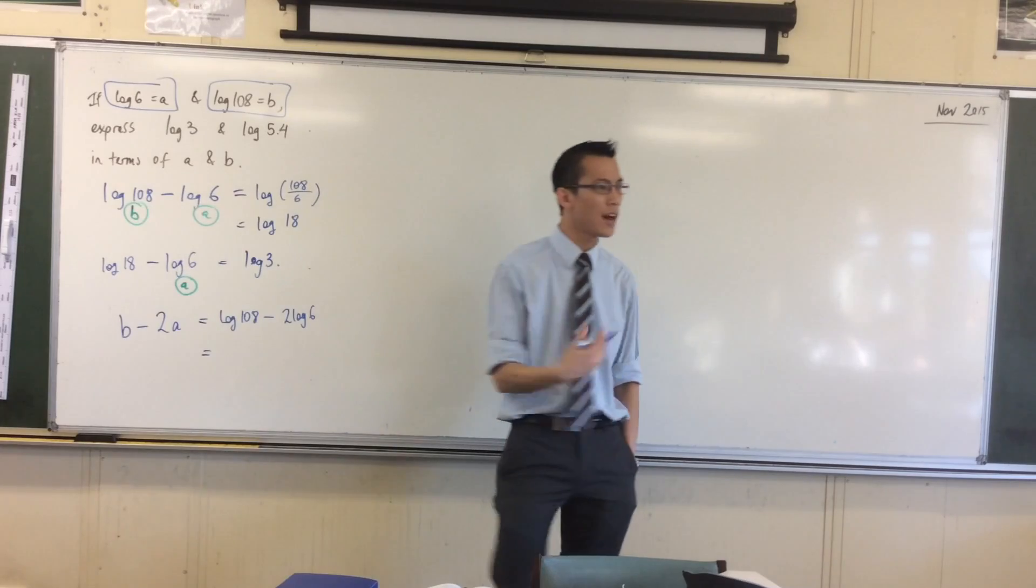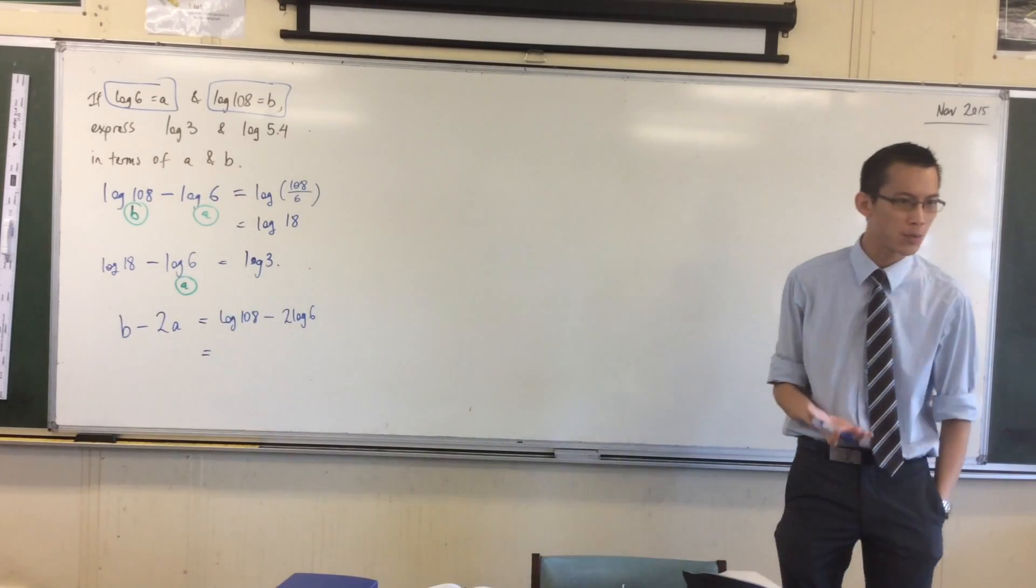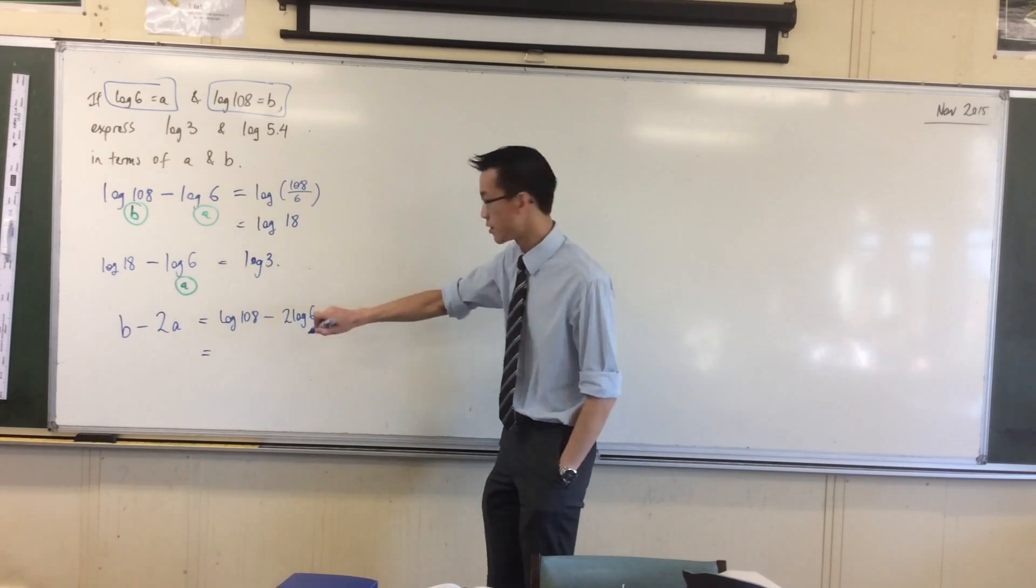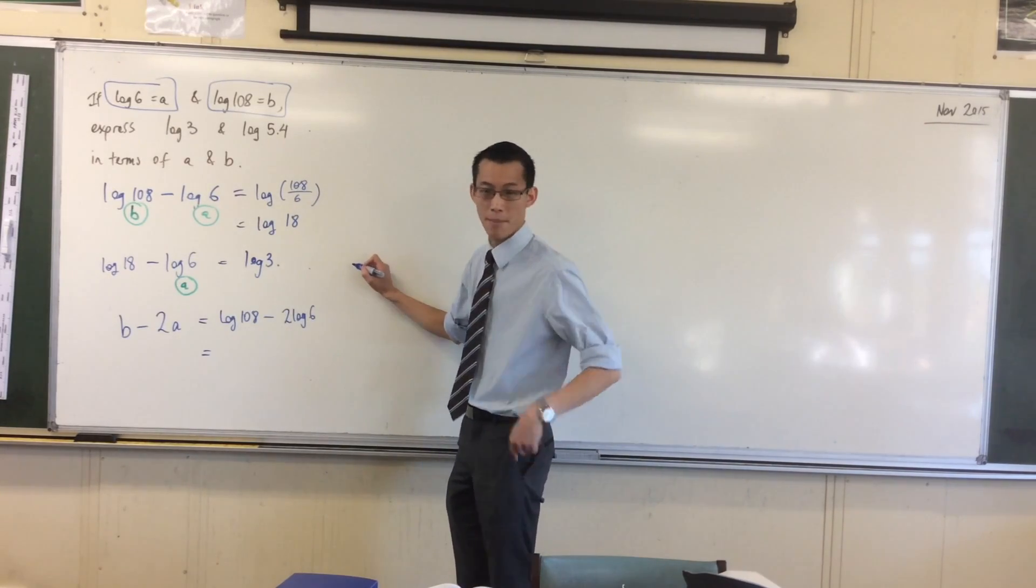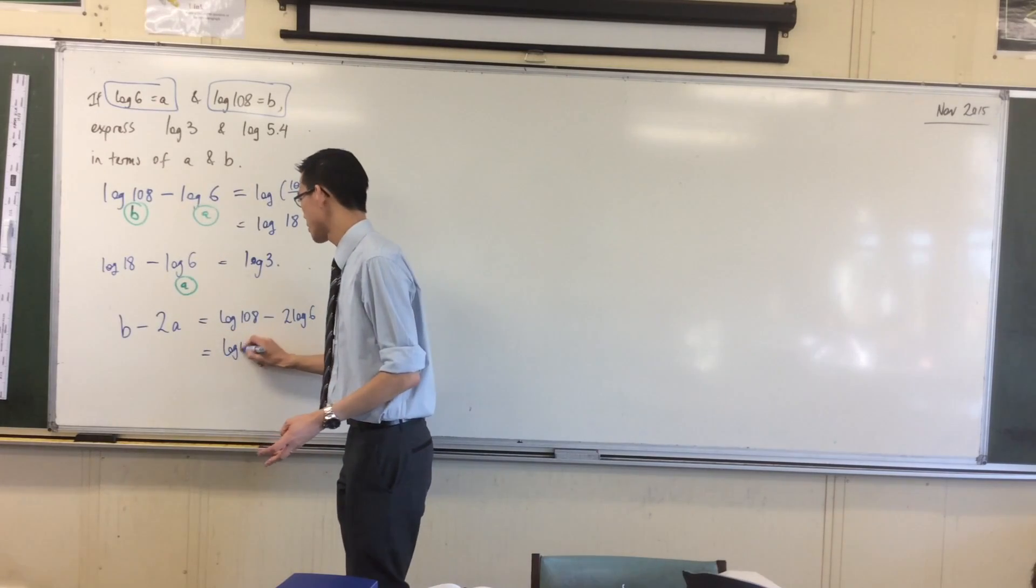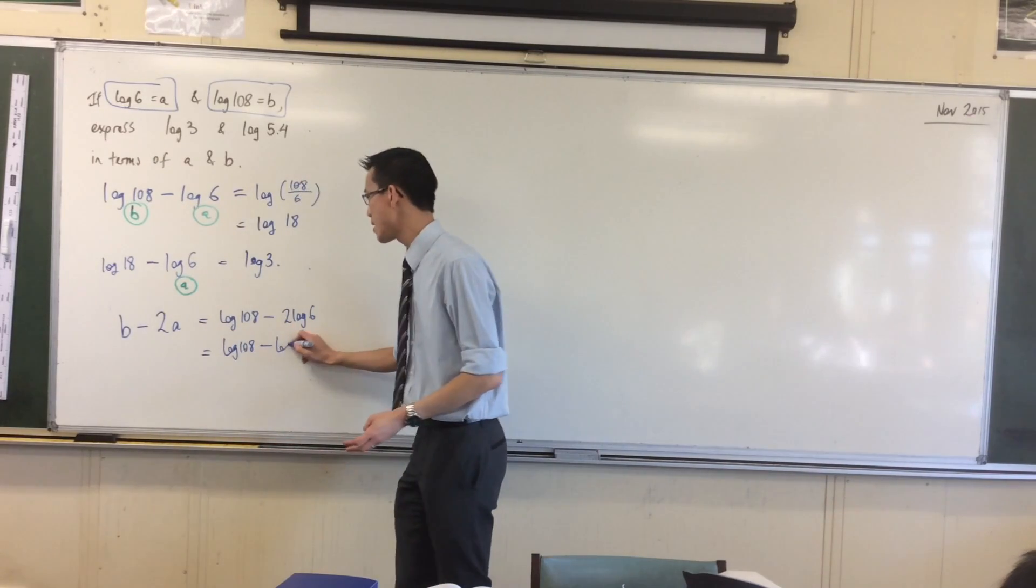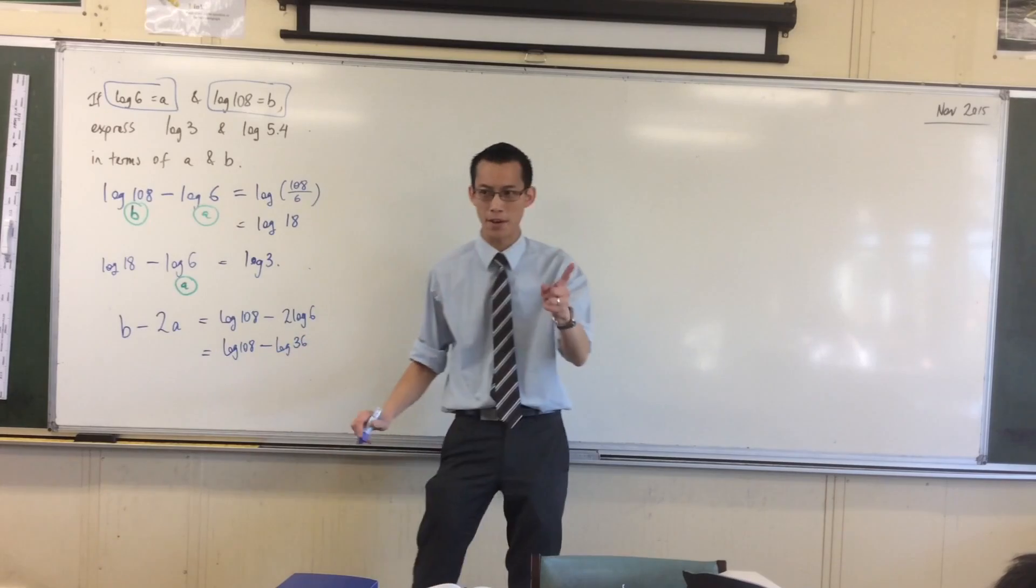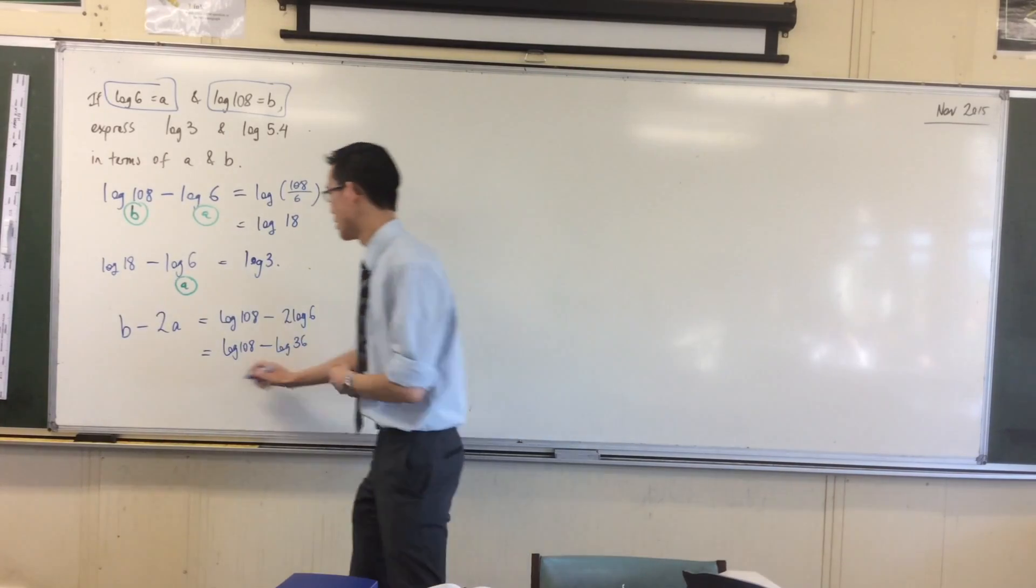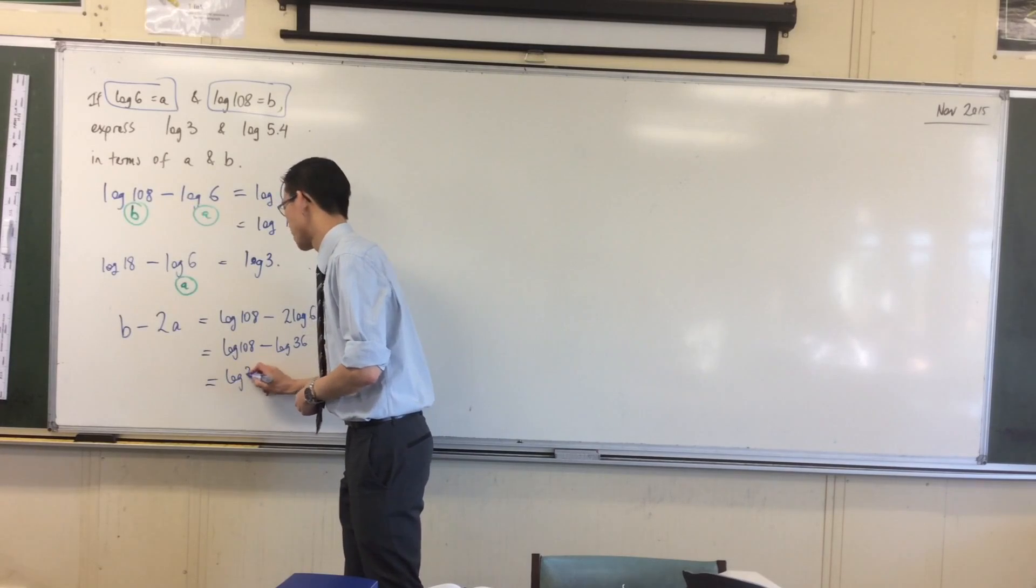2 log 6—I can do another log law here. Which one do I have at my disposal now? It's the power law, isn't it? That 2 can hop up the top and become 6 squared, which is 36. So log 108 take away log 36. This looks familiar. This is the subtraction, which turns into division, which is the log 3 that I was after.